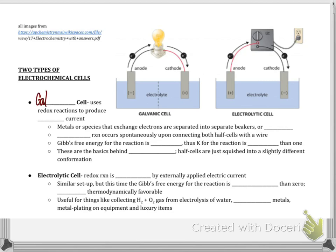So galvanic cells, these are not like a cell in the body. These are a setup like what's shown here that uses redox reactions to produce electrical current. And one other thing, make sure that you've finished the lab before you start these notes. It'll make a lot more sense. So galvanic cells produce an electrical current via redox reactions. Metals or species that exchange electrons are separated into two beakers or half cells. When you connect everything, a redox reaction is going to occur spontaneously once the half cells are connected with a wire. So the Gibbs free energy for this kind of reaction is negative. That's a spontaneous reaction and thermodynamically favorable.